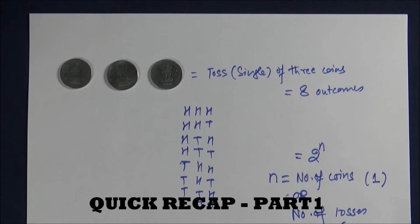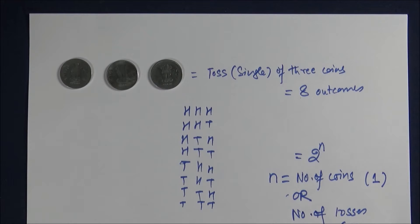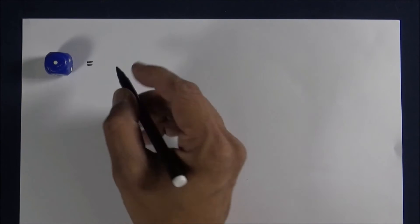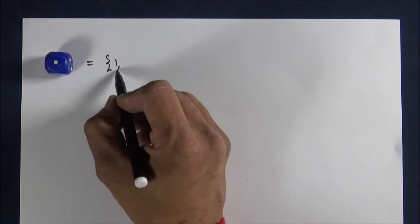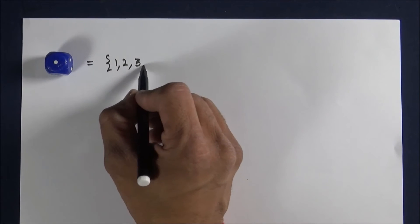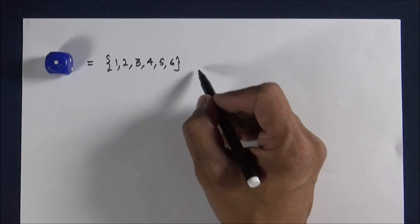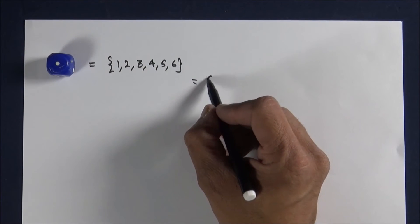Now I will take you to cubical die. Generally, when we take dice in probability, we mean a cubical dice with numbers one to six on six faces. So if you have one die and you throw it, then you get six outcomes. Either you get one, or two, or three, or four, or five, or six. So the number of outcomes are six.